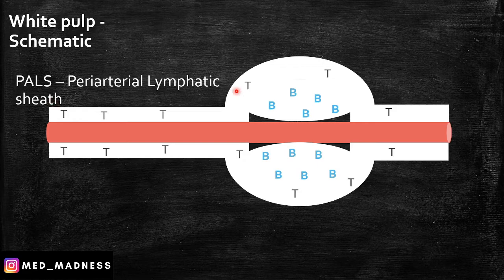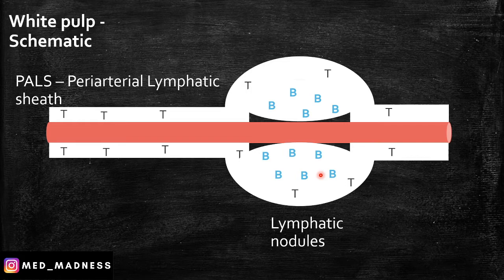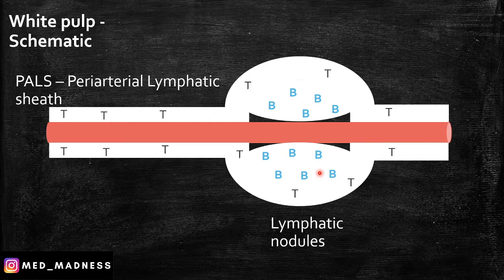And you can appreciate a nodule here — these are lymphatic nodules. In the center of the nodule, you can appreciate the B cells. Remember, lymphatic nodules are predominantly B cells and PALS is predominantly T cells. Note that these B cells are in an active state. If they become active, this area is called the germinal center.